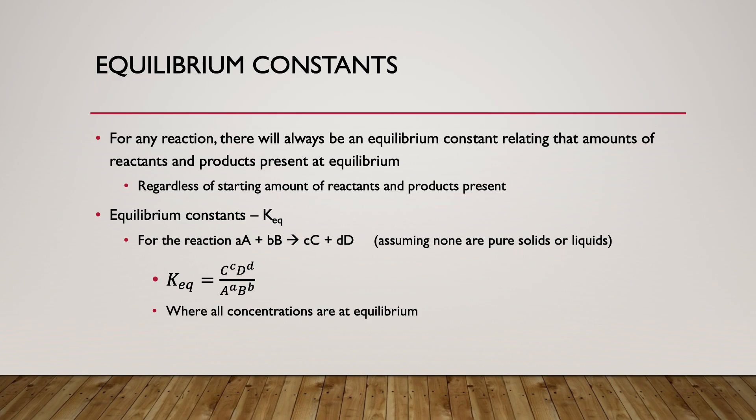Two important notes when calculating the equilibrium constant: first, all concentrations or pressures plugged in must be the equilibrium values — you already have to be at equilibrium. Second, pure solids and pure liquids don't really have a concentration or pressure, so they're treated as one in the equilibrium expression and don't affect the equilibrium constant.